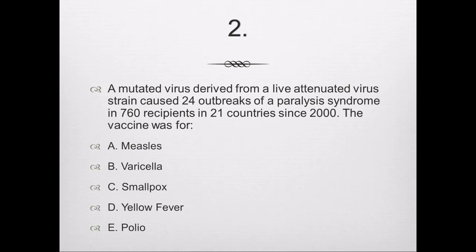Question number 2: A mutated virus derived from a live attenuated vaccine strain caused 24 outbreaks of a paralysis syndrome in 760 recipients in 21 countries since 2000. The correct answer is E, polio. Circulating vaccine-derived poliovirus is a phenomenon that occurs due to sporadic mutations of oral poliovirus-related strains. It affects people who are unvaccinated — as you vaccinate people with oral polio vaccine, unvaccinated individuals can become susceptible to genetically mutated strains.